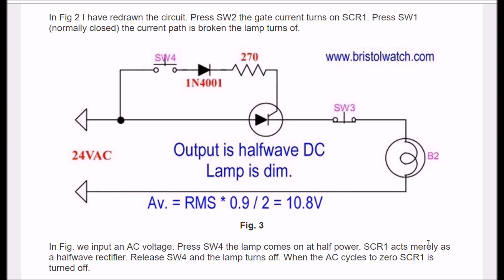Alright, this time I'm inputting 24 volts AC into the circuit you saw before. In this case though, if I press the switch, the SCR will turn on like it did before, but it acts as a half-wave rectifier. And thus your actual voltage across the bulb is something like RMS times 0.9 divided by 2. I got about 10.8 volts. So it acts like a half-wave rectifier when you trip it on with AC. And when you release the switch it will turn off, because the AC at the zero crossing point goes to zero, breaking the current path. I do not need switch SW3 any longer to turn off the SCR.